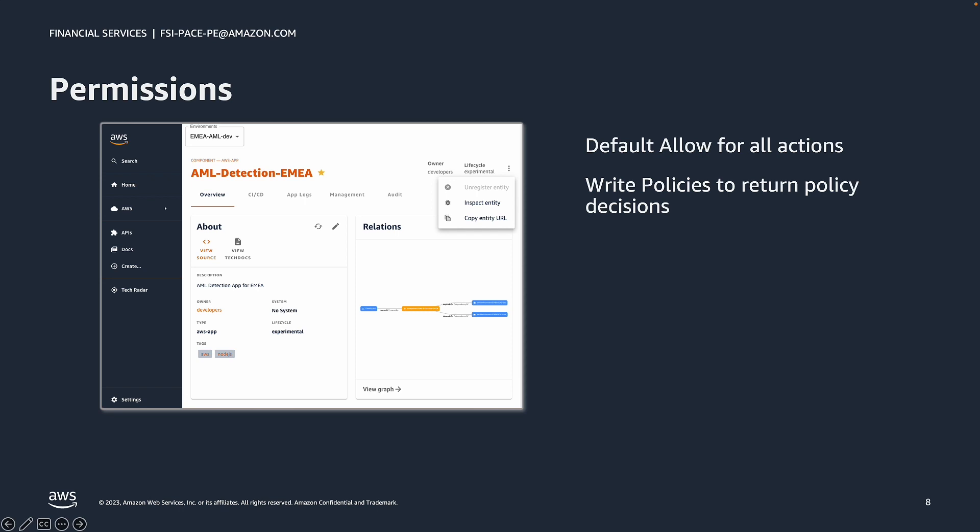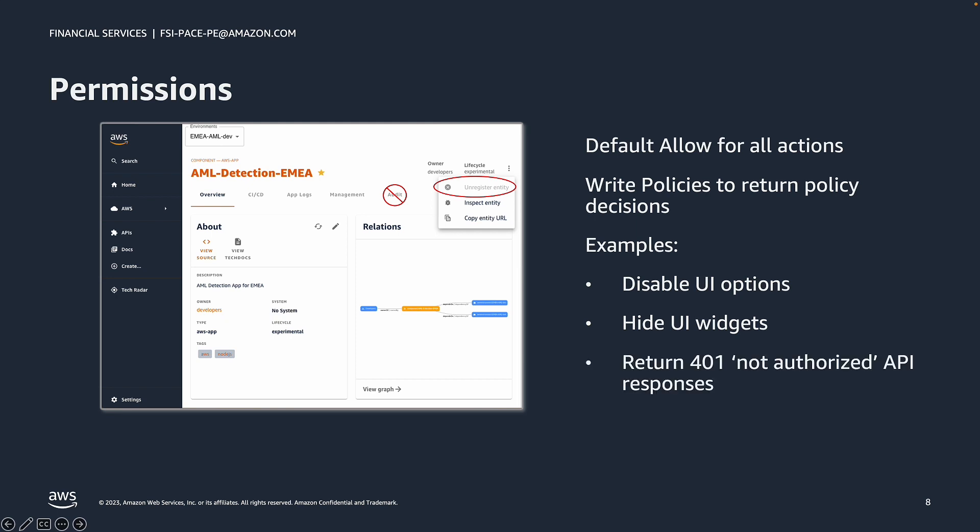For example, say a user Sam is in the Human Resources Developer Group and Sam might perform an action which requests the ability to view applications owned by the Payments Developer Group. A policy could return a decision that denies Sam the ability to read those applications since Sam isn't a member of the Payments Developer Group. With policy decisions, you can customize the Backstage application to further enforce authorized access by disabling actions in the UI such as the ability to delete entities. You can also completely hide entire widgets such as a tab on a page or the entire page itself, preventing users from accessing information they shouldn't view at all. Enforcement of a policy decision may also be done at an API level and the front end may receive a 401 not authorized response to an API request, in which case you may choose to display an error message to the user.